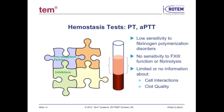Traditional laboratory-based tests, such as PT-INR or APTT, provide an assessment of only part of the whole blood sample — the plasma component. Therefore, they only demonstrate the influence of plasma-based pro-coagulant and anti-coagulant factors, which complete only part of the picture. These tests provide limited information about disorders of fibrin polymerization or clot propagation, and are not sensitive to the effect of activated factor 13 or clot lysis or breakdown.